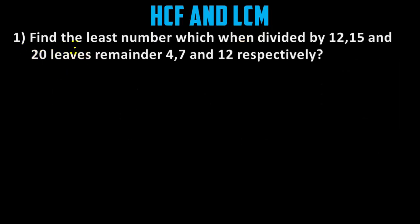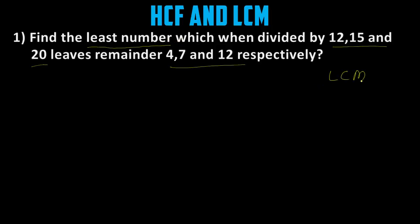First question: find the least number which when divided by 12, 15 and 20 leaves remainders 4, 7 and 12 respectively. In this question we have to find the least number. Wherever you have to find the least number, the first thing you have to do is find the LCM, that is the least common multiple.